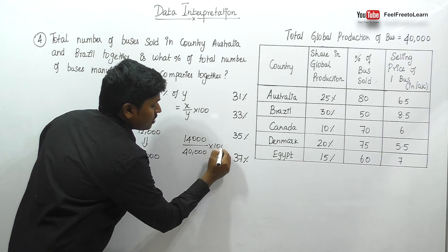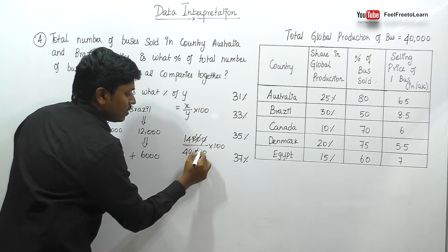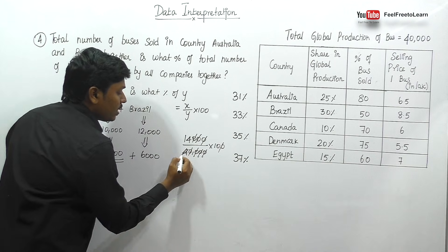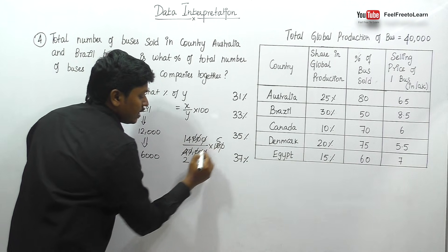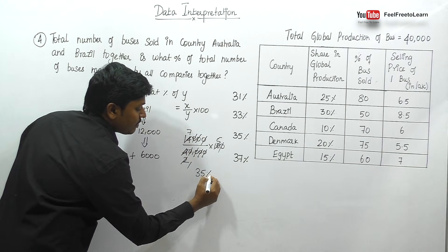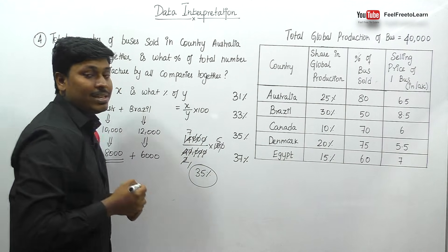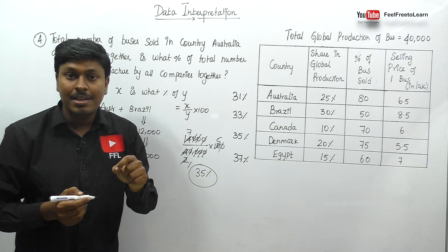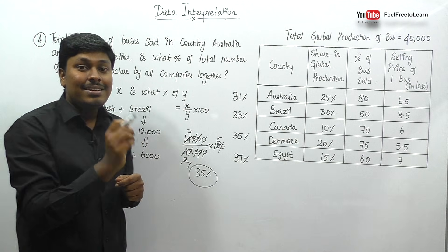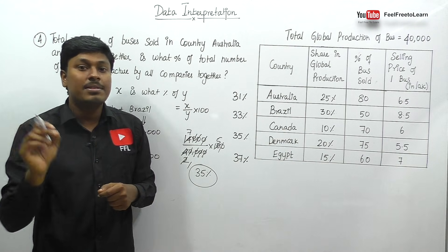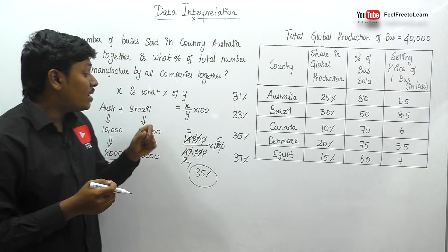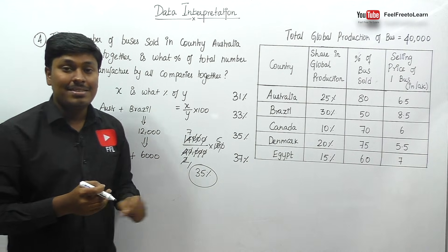So the calculation is 14,000 divided by 40,000 into 100. Cancelling three zeros and simplifying by 2: 14 divided by 40 into 100. Numerator: 7 × 2 = 14; denominator: 2 × 20 = 40. This simplifies to 35%. Always remember: wherever you find 'is what percentage,' use x divided by y into 100. The answer for question 4 is 35%.